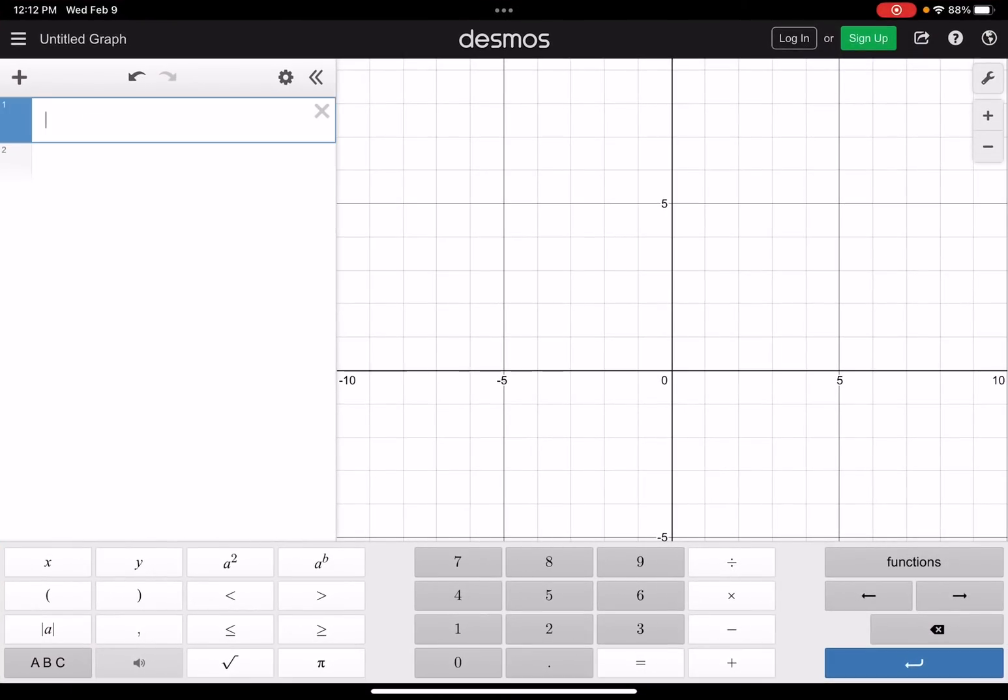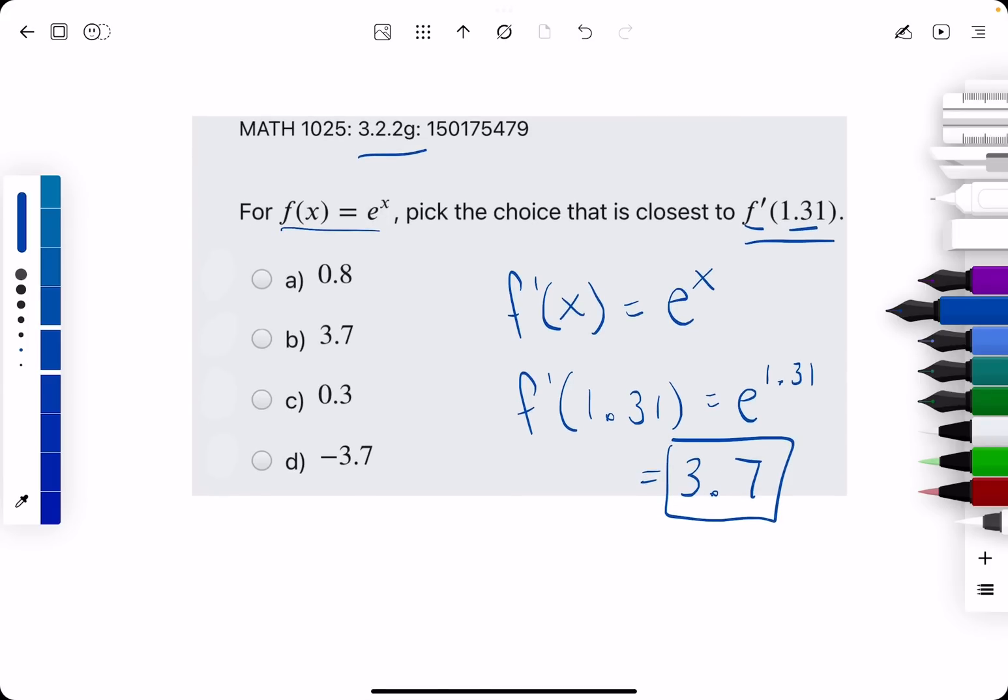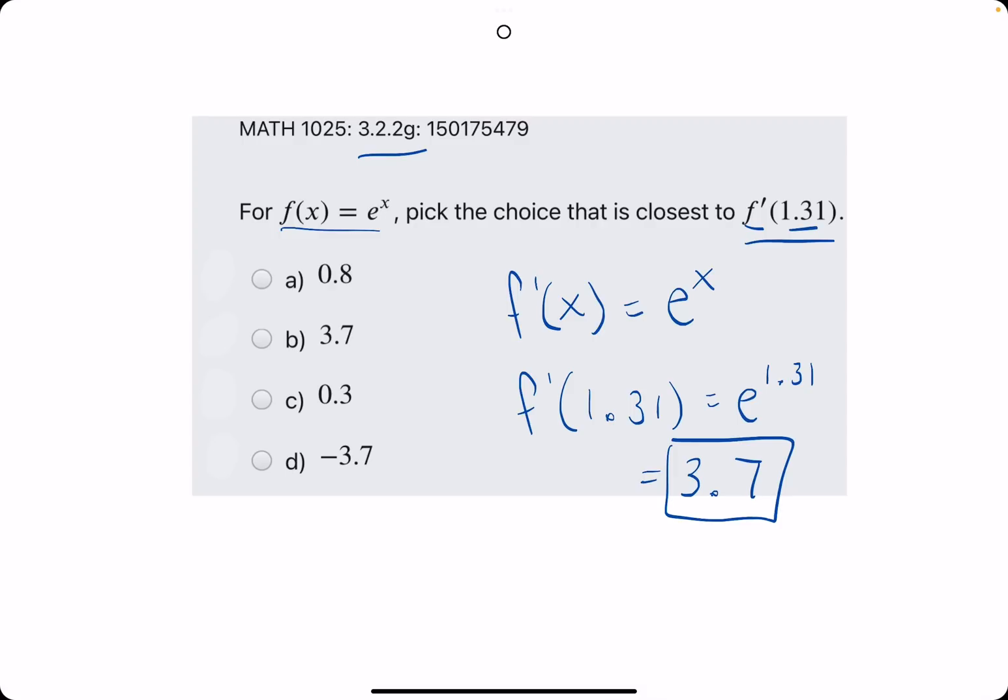Let's break out Desmos. We'll type in e. We will raise it to the 1.31, and we get 3.71, or 3.7 if we round. All right, so it looks like b, positive 3.7, is our answer.